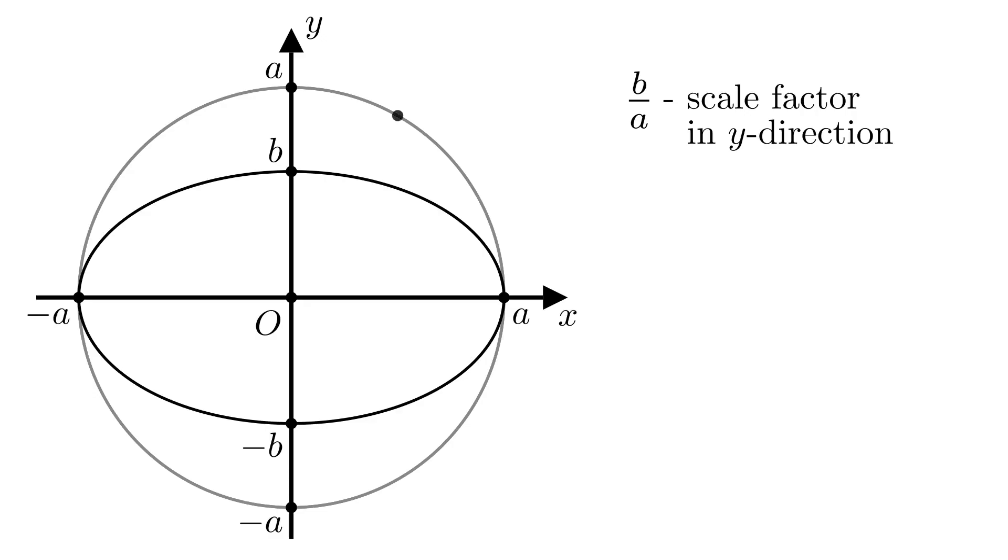Let's look at a point on the circle, and let's draw a line through that point perpendicular to the x-axis. When we shrink the circle in the y direction, the x coordinate doesn't change, but the y coordinate is multiplied by the scale factor.